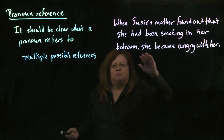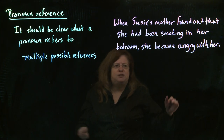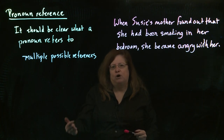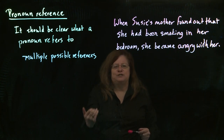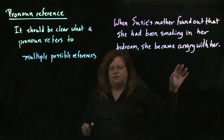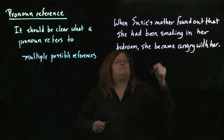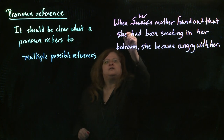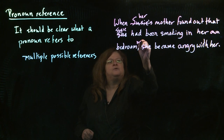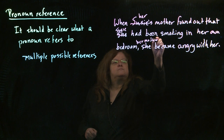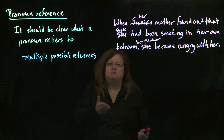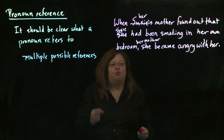'She became angry with her' — was that the mother becoming angry with Susie, or Susie becoming angry with her mother? We don't know. The person who wrote this sentence probably knows exactly what they meant, but it's just not clear on paper. To fix something like this, we need to find ways to make it clear who is being talked about. So we might write: 'When her mother found out that Susie had been smoking in her own bedroom, her mother became angry with her.' Now we've clarified who found out who was smoking in whose bedroom, and who became angry with whom.